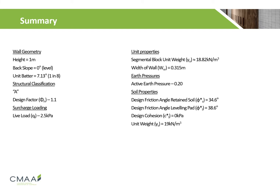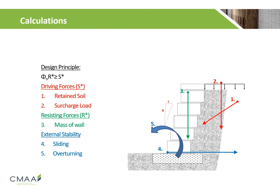As a general summary, we've already determined the wall geometry, the structural classification, the surcharge loading, the unit properties, earth pressures, and the soil properties for use later on. Our calculations should follow the design principle where the design factor multiplied by the design resistance effect shall be greater than or equal to the design action effect, which is made up of a combination of the retained soil and surcharge load, while our resistance effect is made up of the mass of the wall itself.